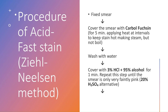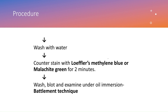After heating, wash with running water. Then apply the decolorizer: 3% hydrochloric acid with 95% alcohol for one minute. You may need to apply it more than once — keep applying intermittently until the smear is only faintly pink. Wash again with water. Alternatively you can use 20% sulfuric acid as the decolorizer.